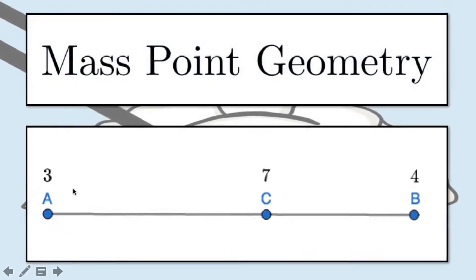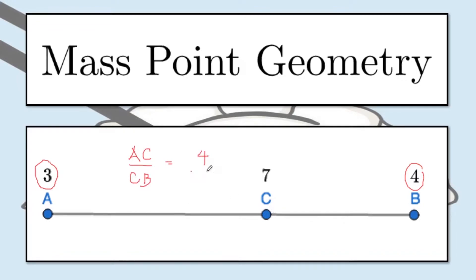Let's go back to the figure. In this figure, AC is longer than CB, so we can already expect that the weight assigned to B should be greater than the weight assigned to A — which is true. Since the weight on B is 4 and the weight on A is 3, the ratio AC over CB equals the larger weight to the smaller weight, 4 to 3. Now, what is the 7? It is the total mass on point C, because 7 equals 3 plus 4. If you put 3 on A and 4 on B, the total mass on C would be 7.